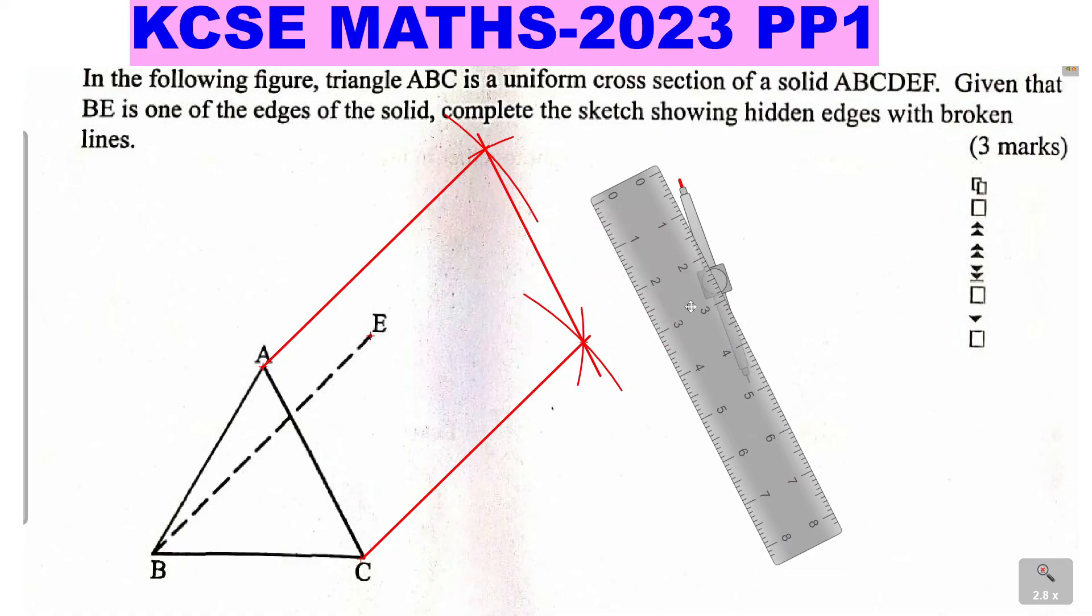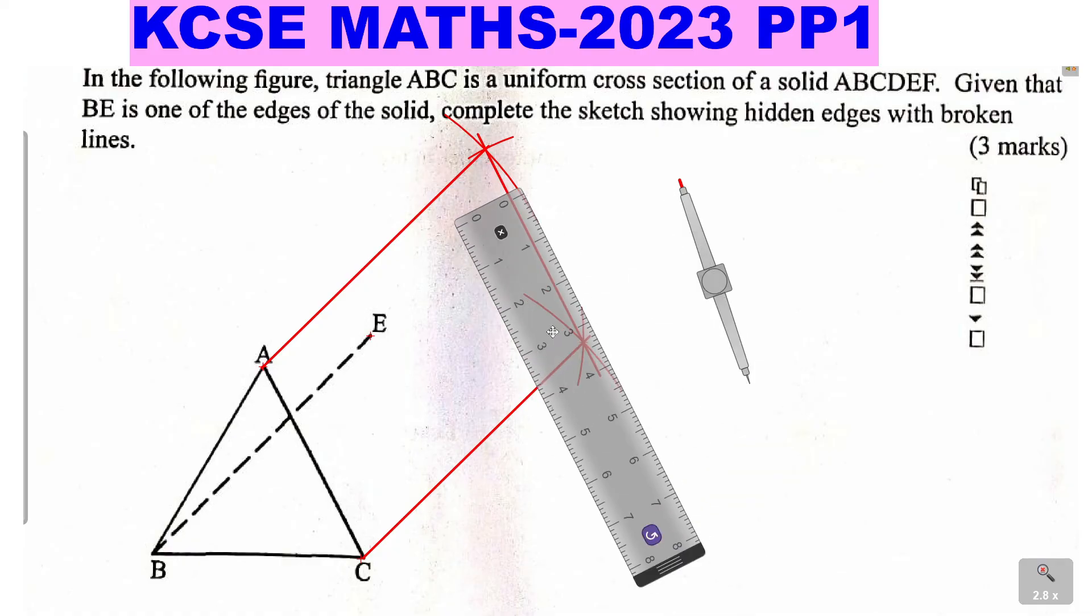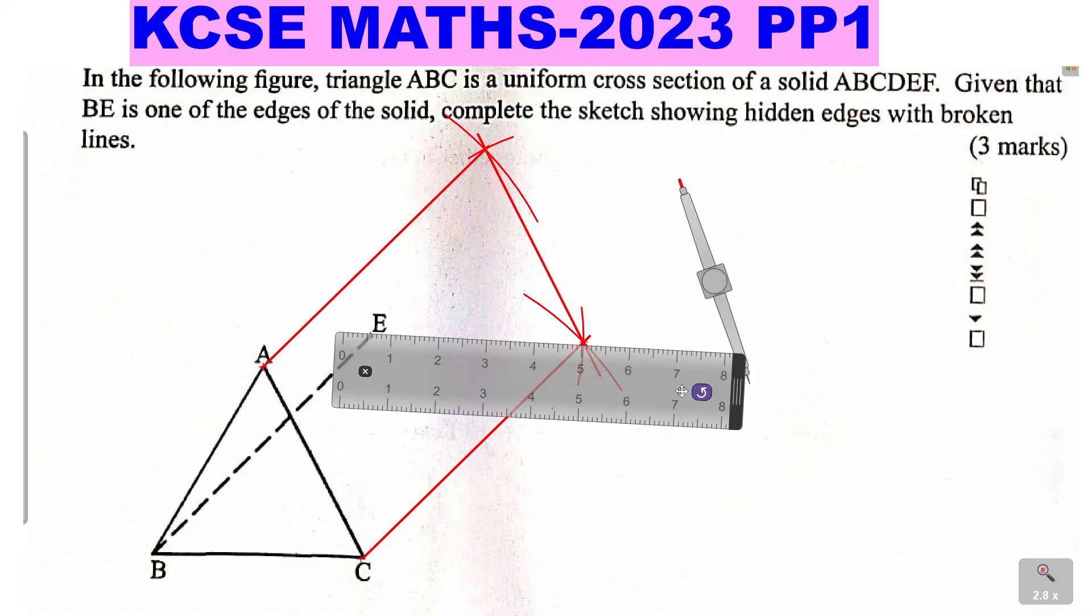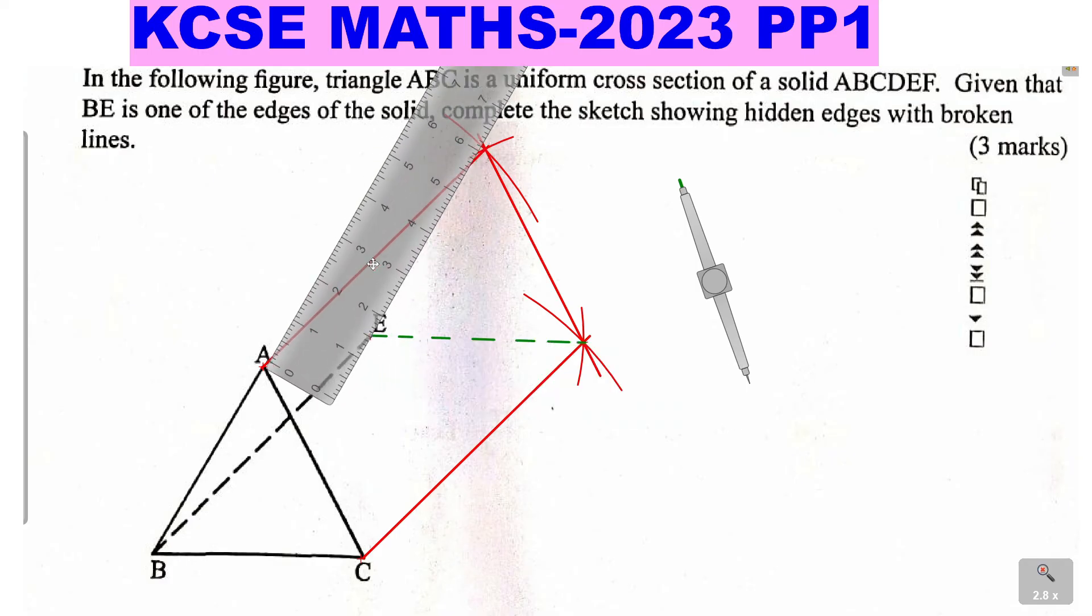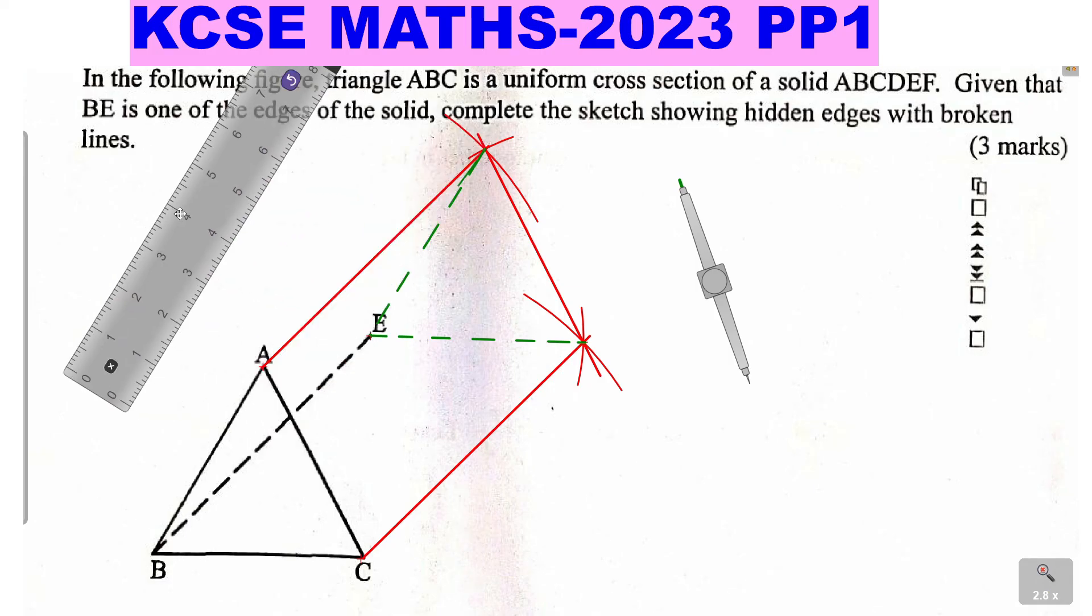Let's go to the hidden ones, the ones that you cannot see. We start with this one that is here. So this one is the first one that will be hidden. You're going to complete it using broken lines that will be hidden like that. Then the other one is this one. This one will be broken as well. So this is the next. That one will be broken. And I think we've completed all the hidden broken lines.